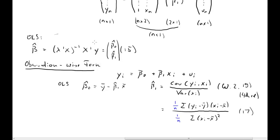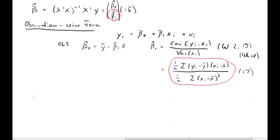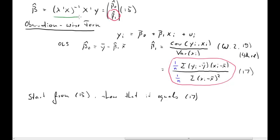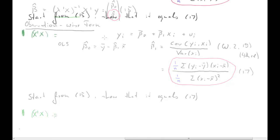Going back to the matrix formula, beta-hat is a 2-by-1 vector. What we're going to show is that the second element of that 2-by-1 vector is exactly the same as the covariance divided by variance formula. So equations 15 and 17 should be exactly equal, and we'll start from equation 15.